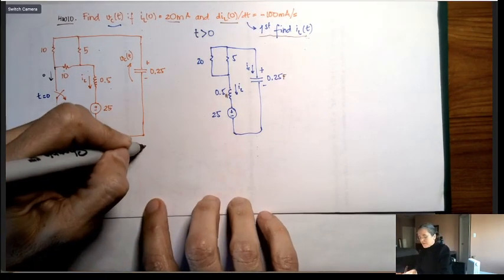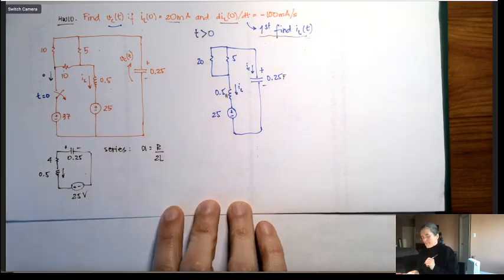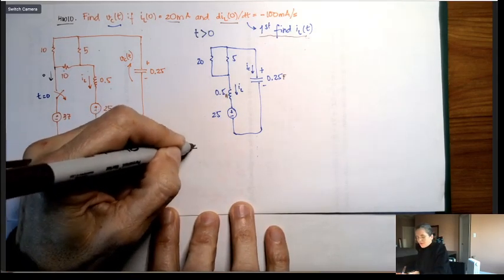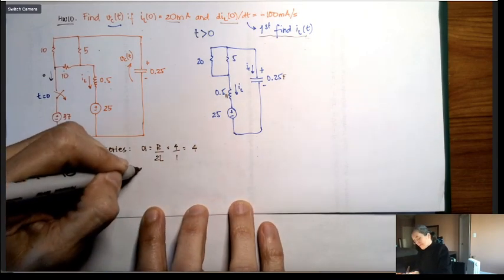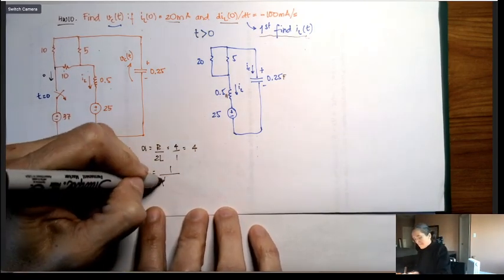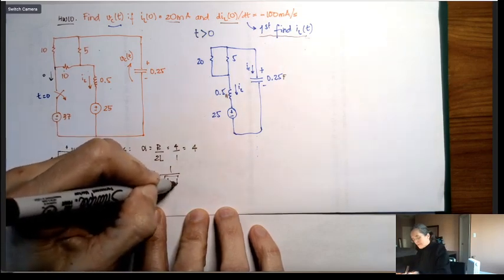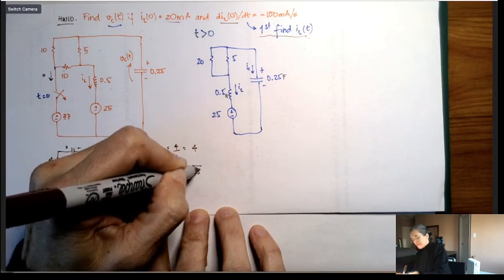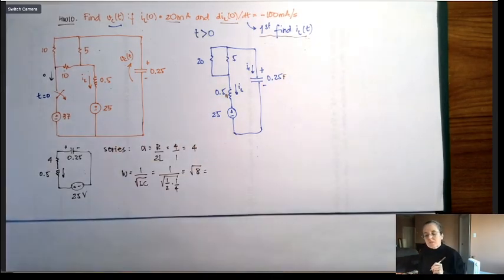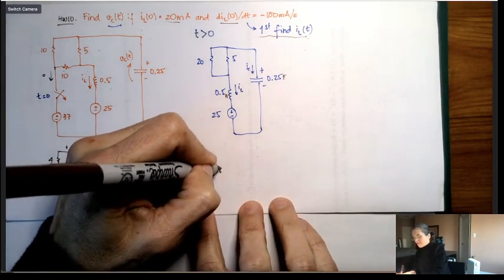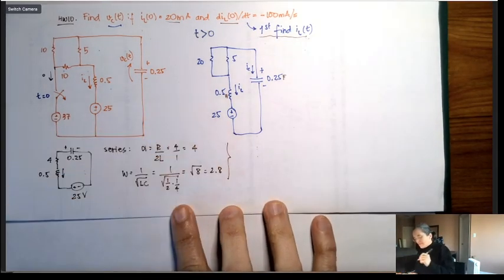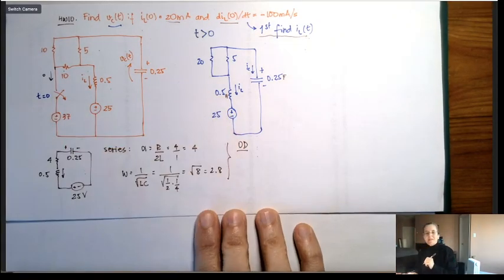For a series RLC circuit, alpha equals R divided by 2L, so alpha = 4 divided by (2 × 0.5) = 4. The resonant frequency omega-naught equals 1 over the square root of LC, and with L = 0.5 and C = 0.25, that gives square root of 8, which is a little less than 3 since square root of 9 is 3. Because alpha (4) is greater than omega-naught (≈2.83), the circuit is overdamped.